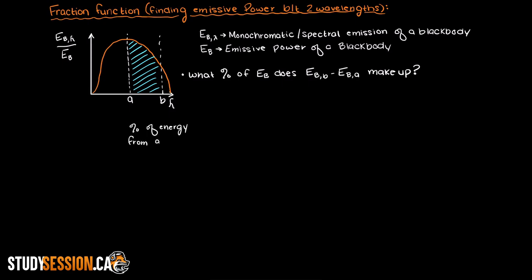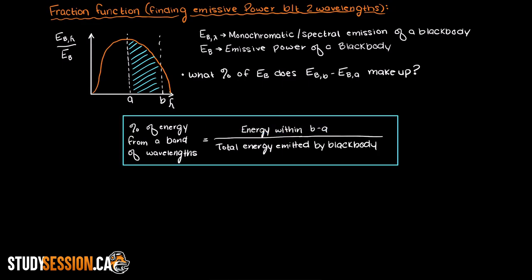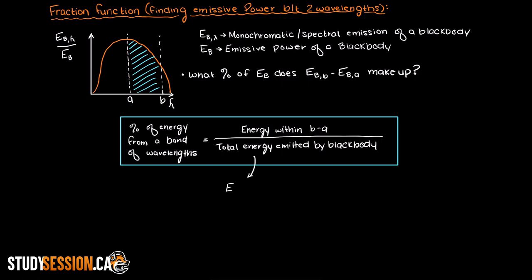So to begin, it makes sense that to understand the percentage of energy coming from a certain wavelength range, we must first understand what the total emissive power of the blackbody is across all possible wavelengths, and this is denoted using this equation, which is just the blackbody emissive power equation that we previously discussed.